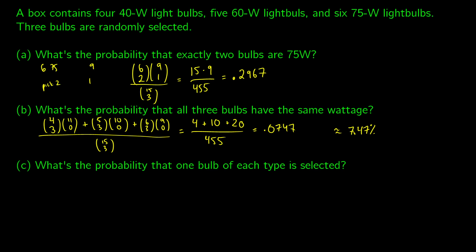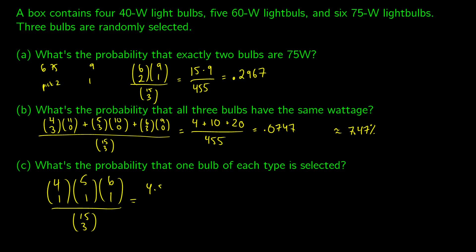What's the probability that one bulb of each type is selected? Out of the four 40-watt bulbs we choose one, out of the five 60-watt bulbs we choose one, and out of the six 75-watt bulbs we choose one. Divided by 15 choose three. Anything choose one equals the top number, so this is 4 × 5 × 6 = 120, divided by 455, giving us 0.2637, or a 26.37% chance. The most likely outcome is picking exactly two 75-watt bulbs.